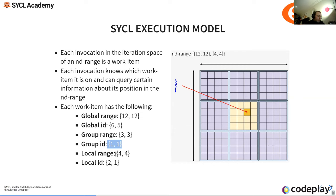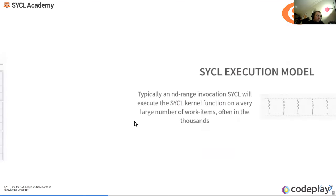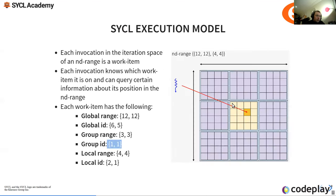The local range is the size of the work group, and the local ID for this work item is two-one. The way you index into these ranges is important — it's actually the opposite of what it is in CUDA, which is important to know.